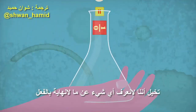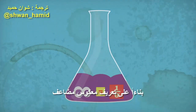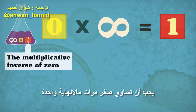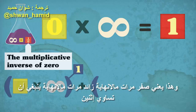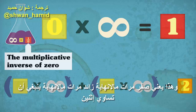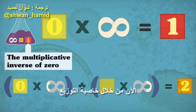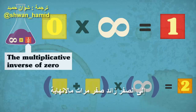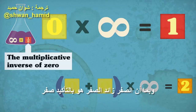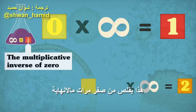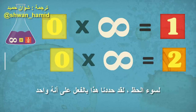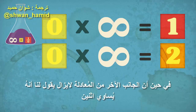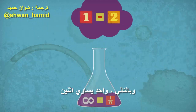Let's try it, imagining we don't know anything about infinity already. Based on the definition of a multiplicative inverse, 0 times infinity must be equal to 1. That means 0 times infinity plus 0 times infinity should equal 2. Now, by the distributive property, the left side of the equation can be rearranged to 0 plus 0 times infinity. And since 0 plus 0 is definitely 0, that reduces down to 0 times infinity. Unfortunately, we've already defined this as equal to 1, while the other side of the equation is still telling us it's equal to 2. So, 1 equals 2.